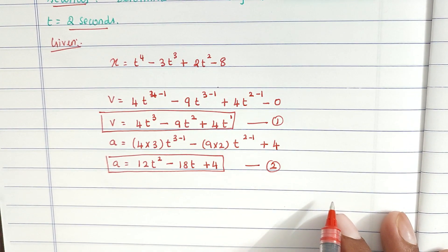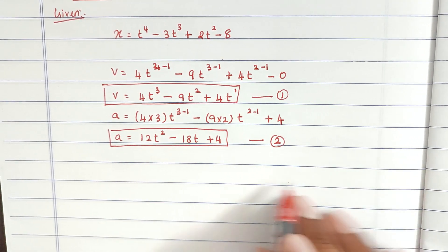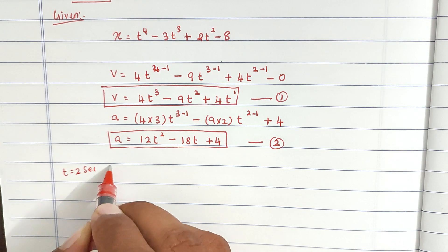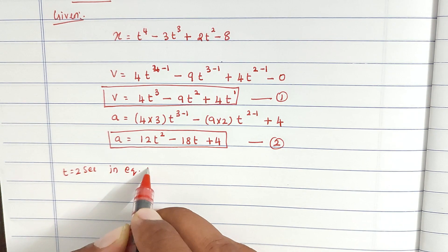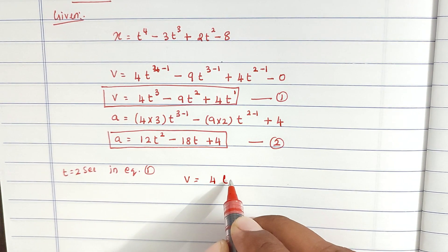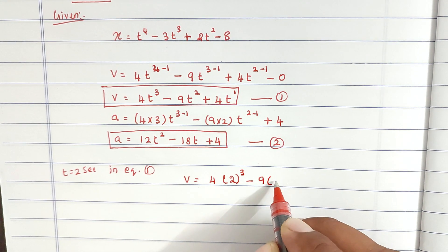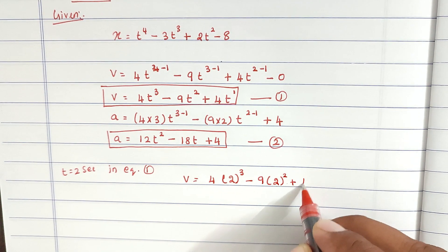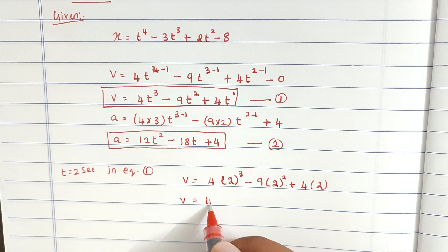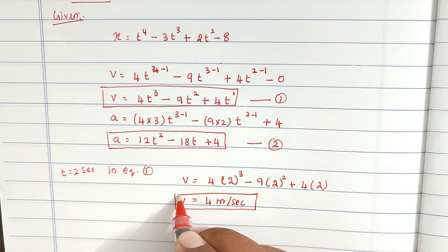Now we substitute t equal to 2 seconds in equation 1. v equal to 4 into 2 power 3 minus 9 into 2 power 2 plus 4 into 2. Solving this, we get the velocity equal to 4 meters per second.